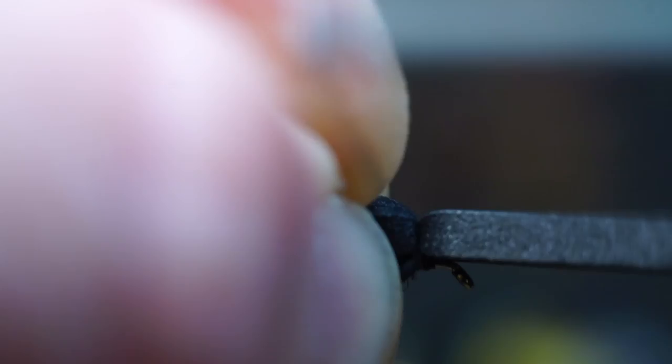Pull your foam forward over all the materials, and pull the legs rearward. Then make a few wraps over the foam, increasing the tightness with each wrap until it is locked into place.